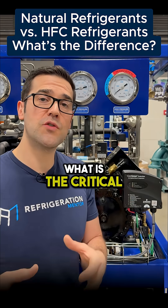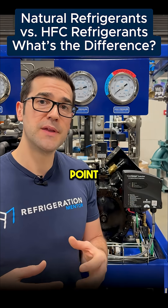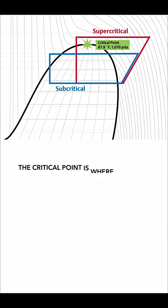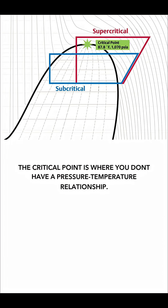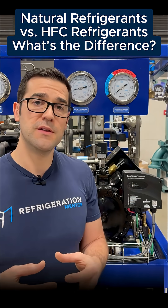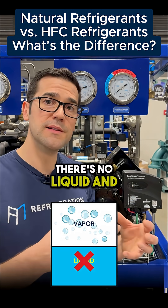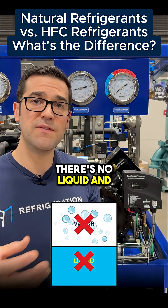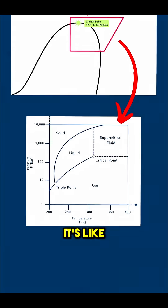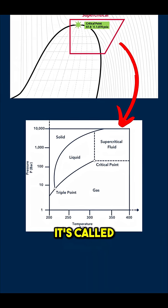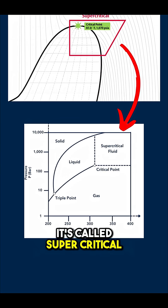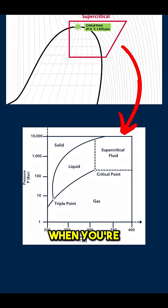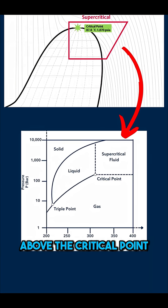What is the critical point? The critical point is when there is no pressure-temperature relationship. There's no liquid and vapor — it's like a fluid. It's called supercritical fluid when you're above the critical point.